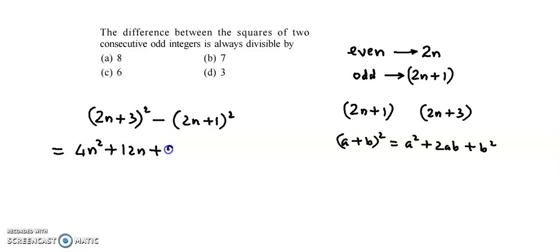If we simplify this, we have 4n square plus 12n plus 9 minus 4n square minus 4n minus 1. So 4n square cancels with minus 4n square.